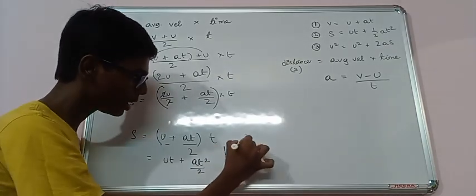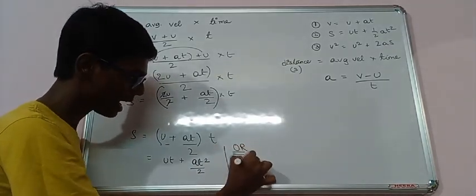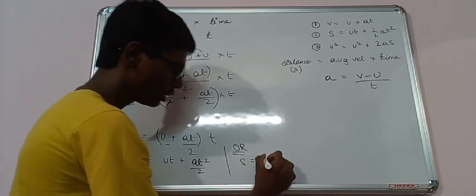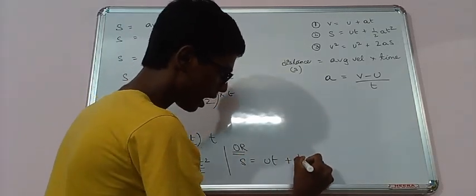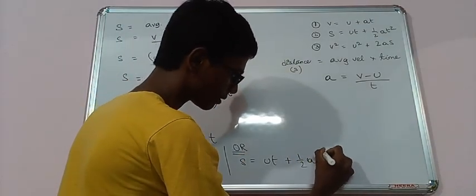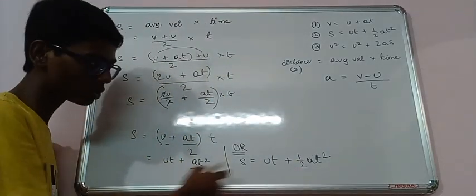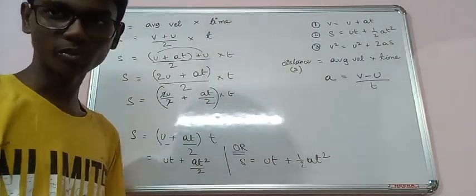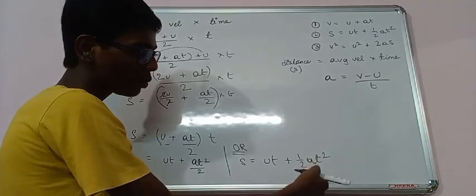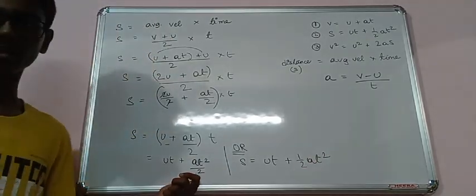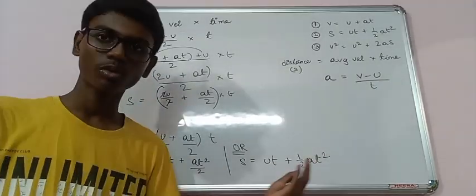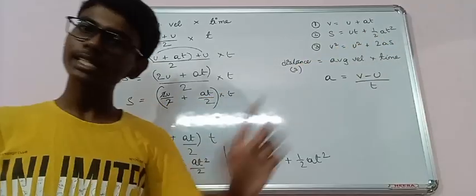Or in other words we can say S equals to UT plus half AT square. This by 2 can be written as half. Because if you are multiplying 1 by AT squared it becomes this only. But we take out 1 by 2 from this. Same formula.